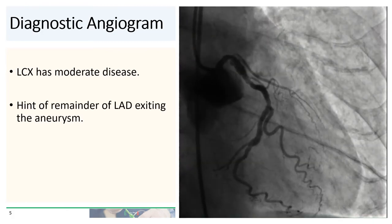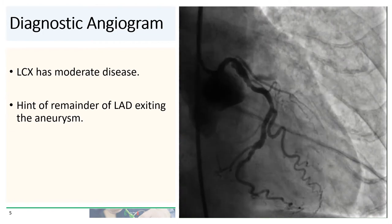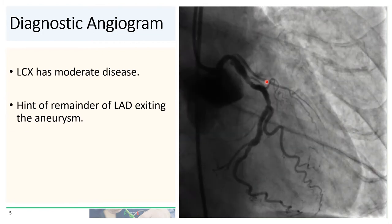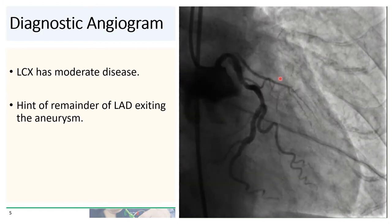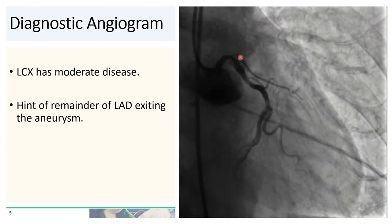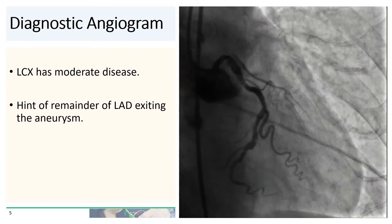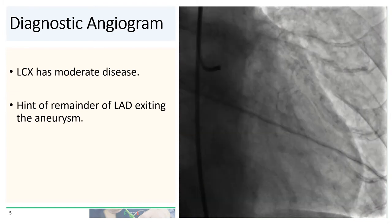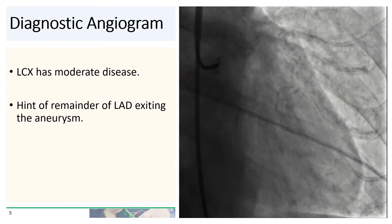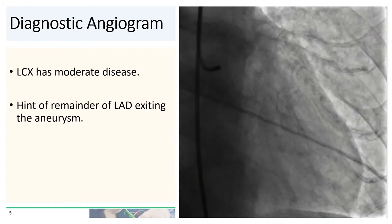In this shot, you see that the circumflex has some moderate disease, and you also see the remainder of the LAD exiting from the proximal LAD aneurysm. At this point, you probably come to the frightening realization that this is going to be a doozy of a case — a patient with an anterolateral STEMI, and you need to find a way to quickly find the outflow of the aneurysm and wire the LAD.